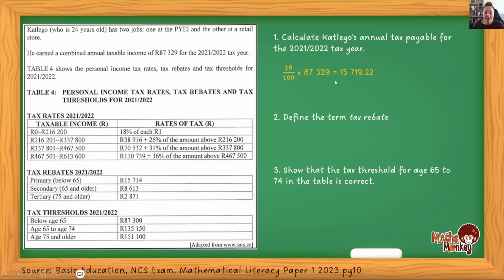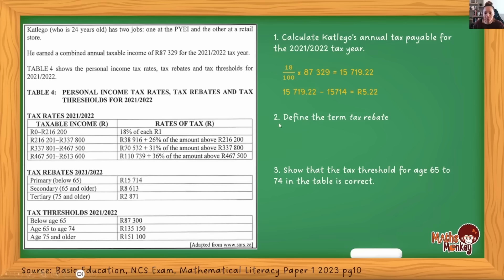If it's in the first tax bracket, you calculate 18% of whatever you earned that year — that is his tax amount. But he also qualifies for tax rebates because he is under 65, which means he qualifies for the primary rebate only. If he were older than 65, he'd qualify for both primary and secondary. You take the tax amount and subtract the rebate, so all Katejo owes for the entire year is R5 and 22 cents.